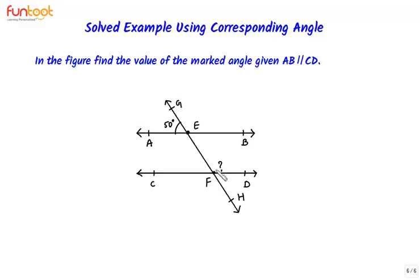That means this angle, given AB is parallel to CD. So AB is parallel to CD here and GH is the transversal. This angle is given to be 50 degrees. We have to find the measure of this angle.